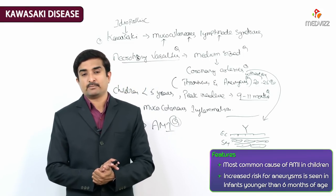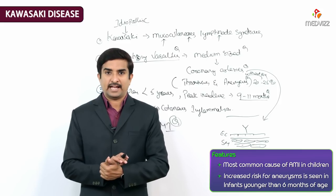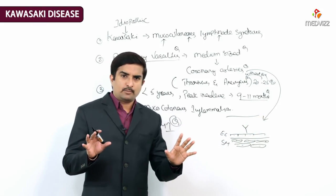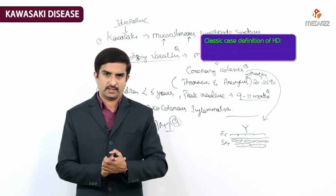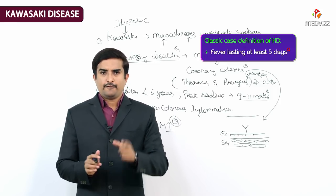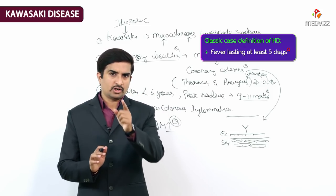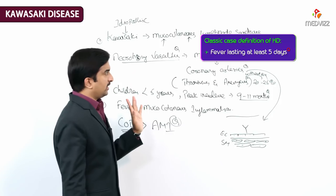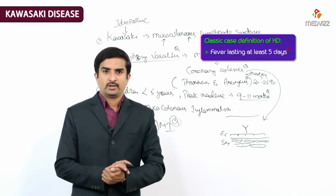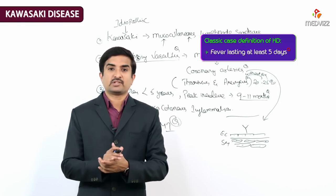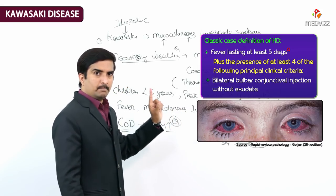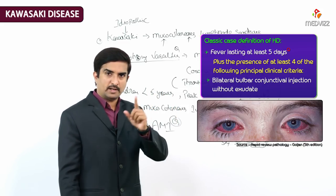Infants younger than 6 months of age may be at increased risk of aneurysms. The classic case definition of Kawasaki disease begins with fever lasting at least 5 days or greater. Along with fever, one presenting feature is bilateral bulbar conjunctival injection without exudate.